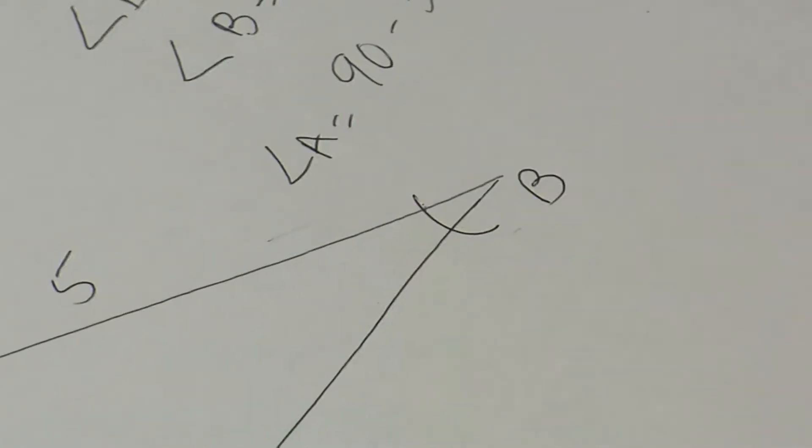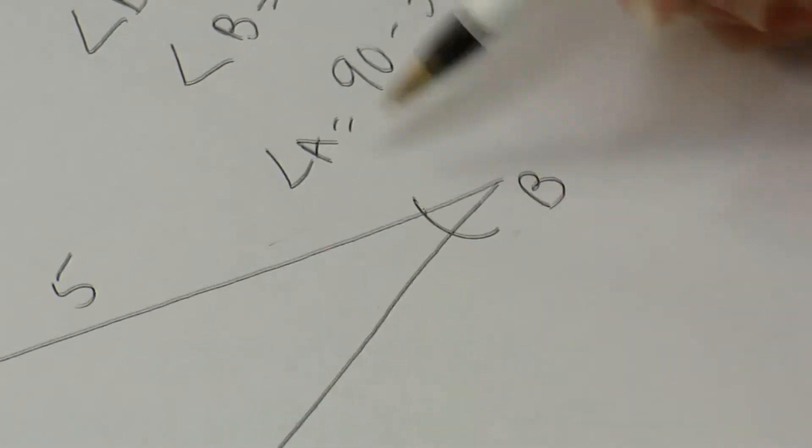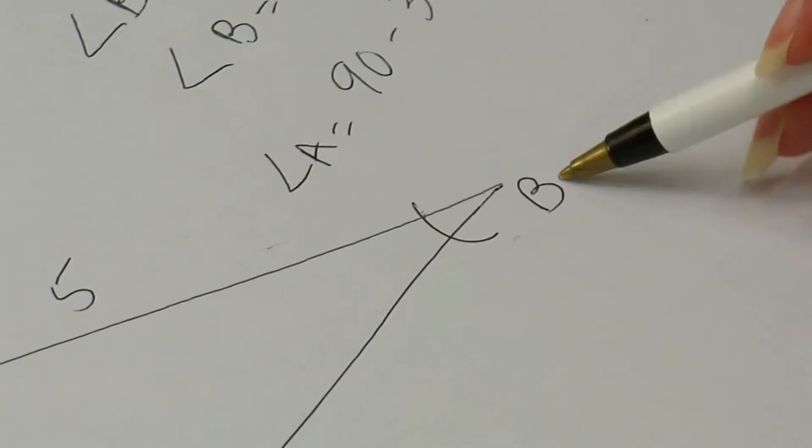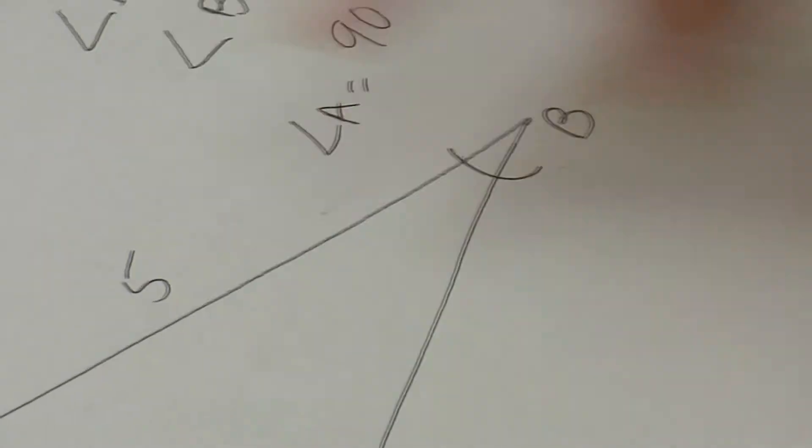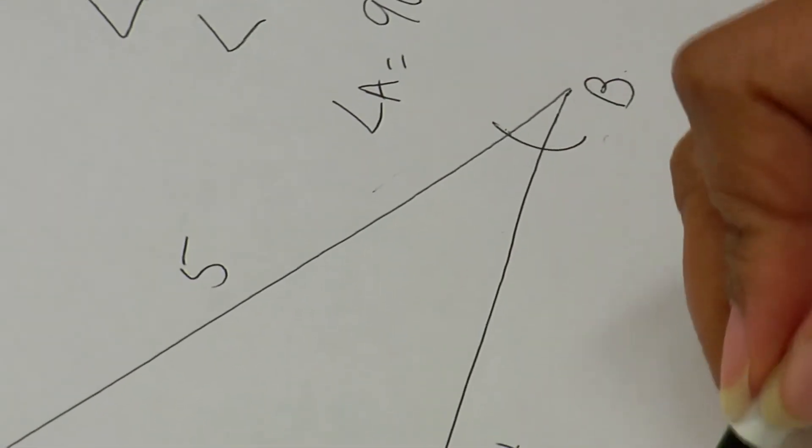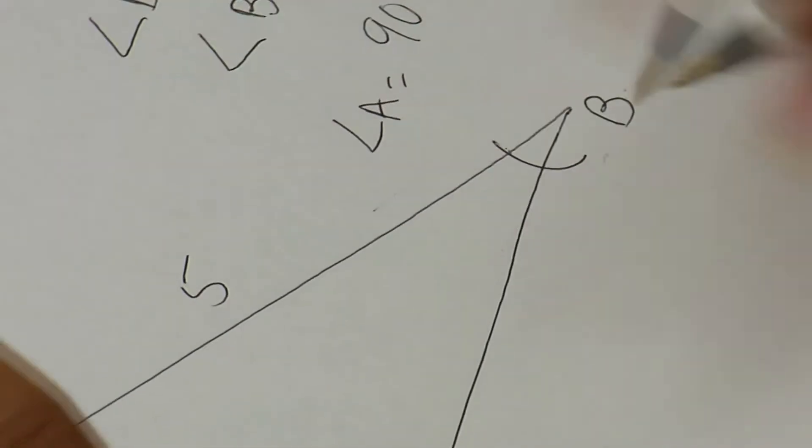But again, I could continue and use my trig ratio as I did the first time here for angle B. So I'm going to do this with angle A using my trig ratio tan. So tan, opposite over adjacent.